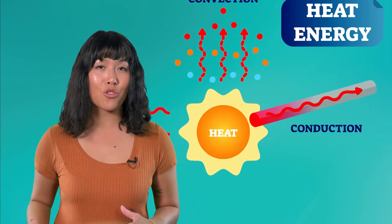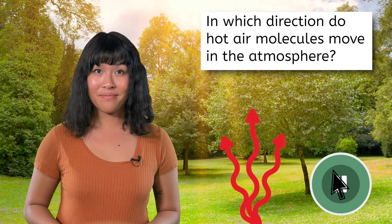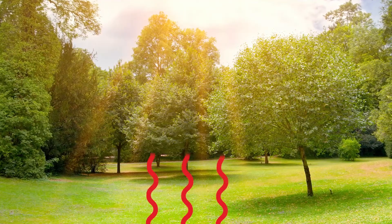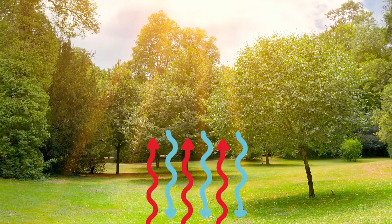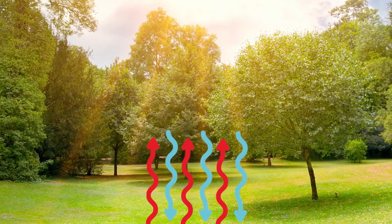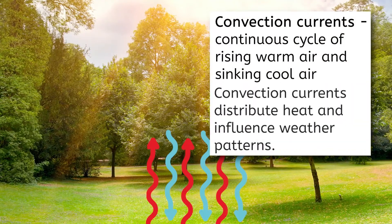Conduction in the atmosphere occurs when heat is transferred through direct contact between the Earth's surface and the air molecules immediately above it, warming the lower layers of the atmosphere. As the heat energy transfers to the air molecules, these air molecules start to move faster and spread out. This brings us to convection. Pause the video here and predict: in which direction do these hot air molecules move in the atmosphere? The hot air is moving quickly and the molecules spread out, making it less dense, so it rises. Cool air has less energy and moves less — the molecules are closer together, so cold air is more dense and sinks. Convection in the atmosphere involves the movement of warm air rising and cool air sinking, creating convection currents that distribute heat throughout the atmosphere, influencing weather and climate.